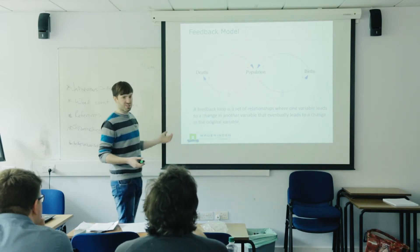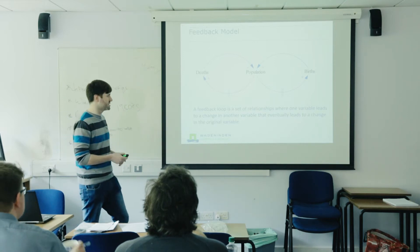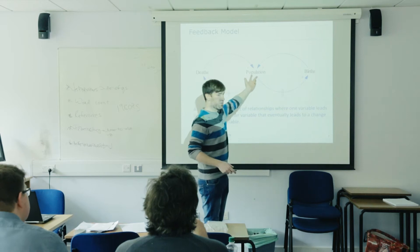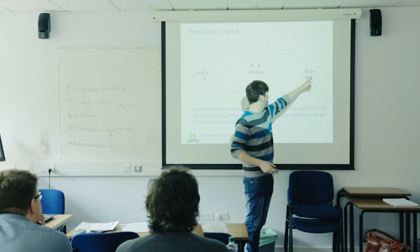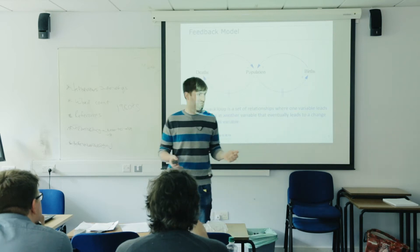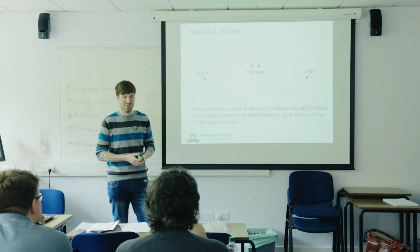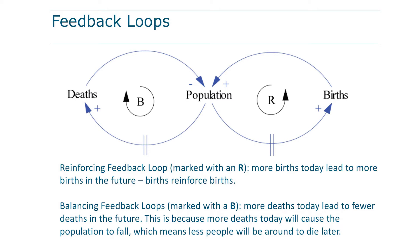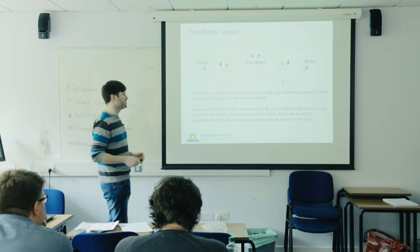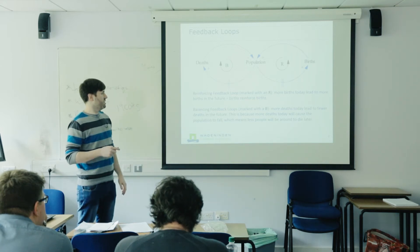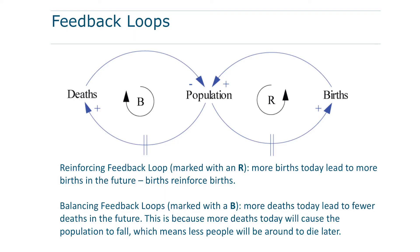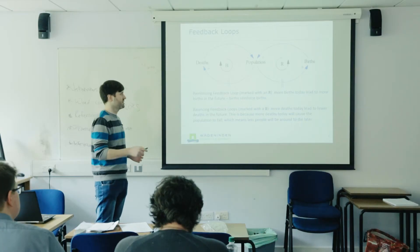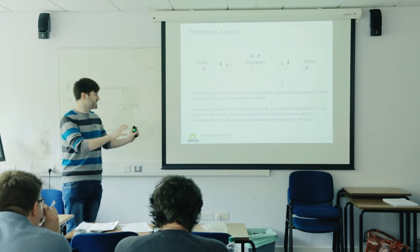The higher the population, the more deaths we're going to have at some point — and this is the delay. In Ethiopia people die much younger than, say, on an island, so this delay has to be specific to the case: maybe 40-something years in Ethiopia and 70-something on an island. The same relates to birth. The balanced loop on the left shows higher population leading to more deaths leading to lower population. The reinforcing loop on the right keeps on going — expansion growth — if there are enough resources.